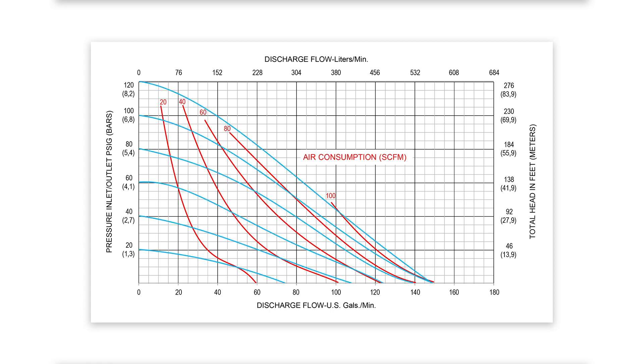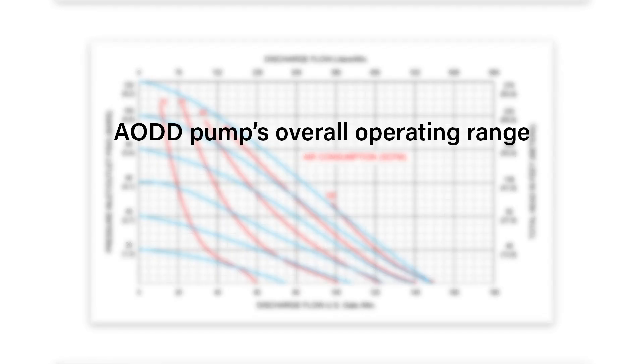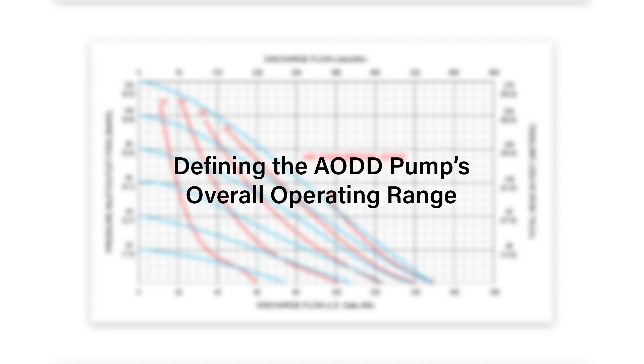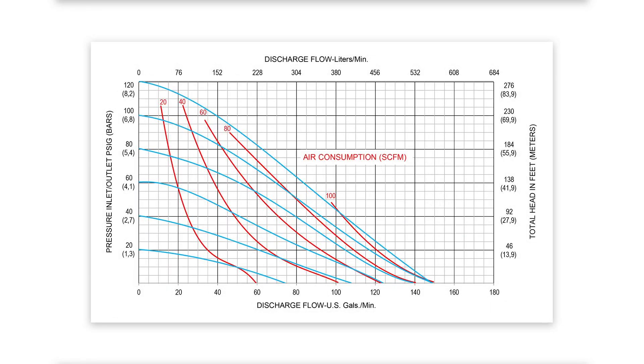There are three main pieces of information an AODD pump performance curve can define: the AODD pump's overall operating range, the AODD pump's performance, and the AODD pump's air consumption. The operating range is the minimum to maximum gallons or liters pumped per minute, identified by looking at the horizontal axis data range as well as considering the air inlet blue curved axis.